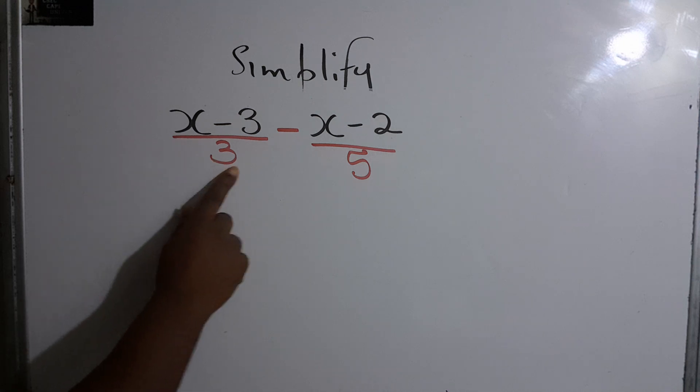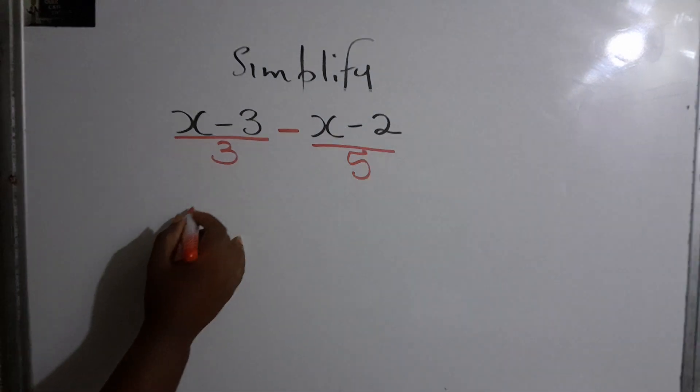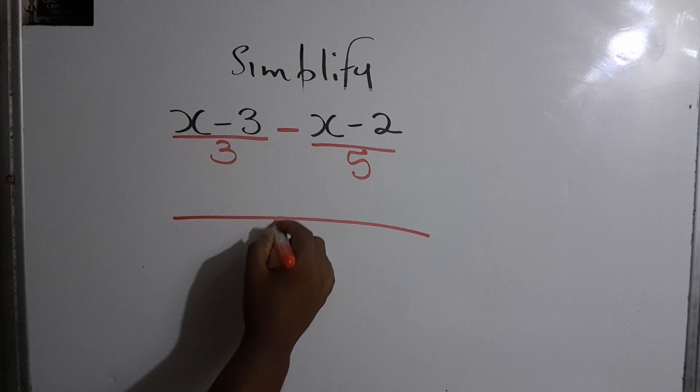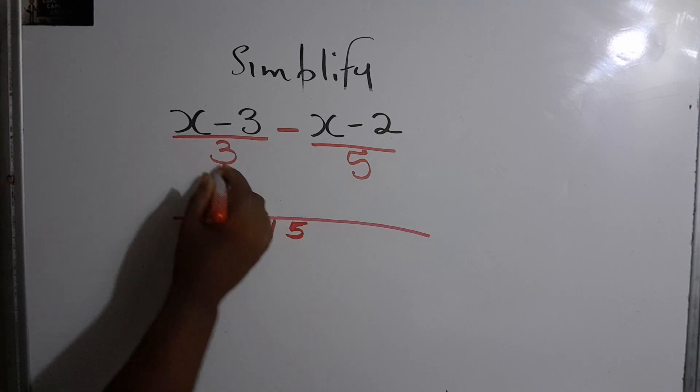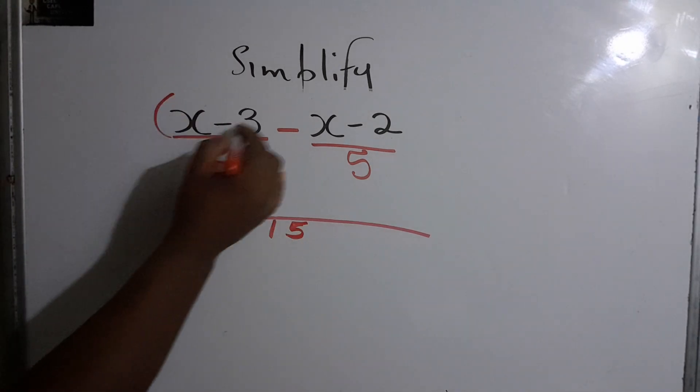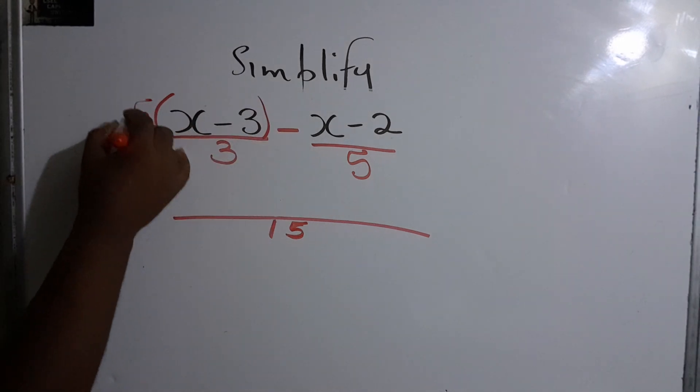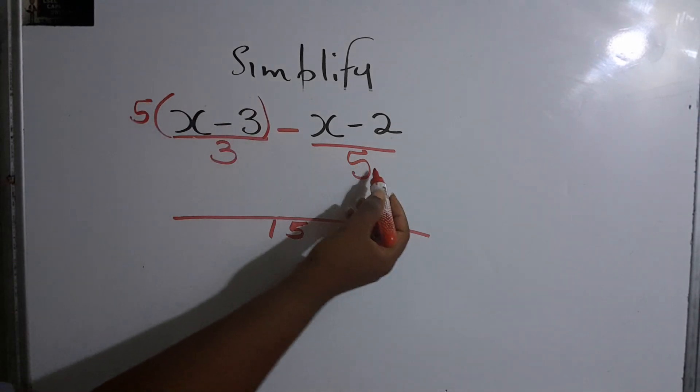We find our LCM of 3 and 5. The smallest number that 3 and 5 can go into, that will be 15. Then we say 3 into 15, which goes 5 times, so we multiply this by 5.